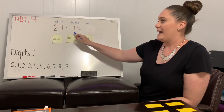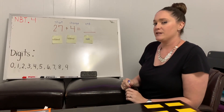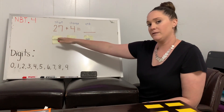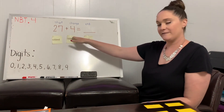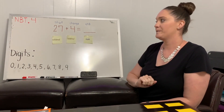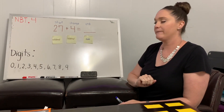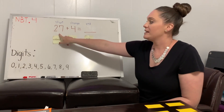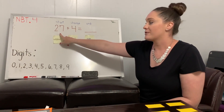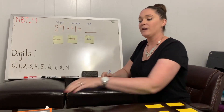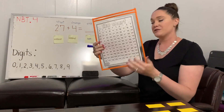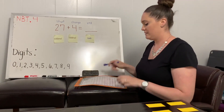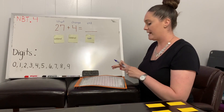When we're adding, which addend do we want to start with — the one of greater value or lesser value? Point to it. If you're pointing to 27, you're right. We want to start with the addend of greater value. So I'm going to show you how to do that on your 120 chart. I know I'm starting with 27, so I'm going to find that number.